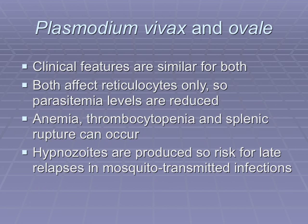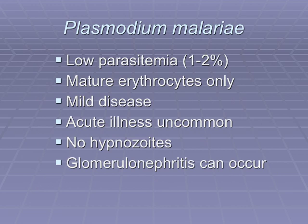Plasmodium vivax and ovale: vivax is much more prevalent, but clinical features are similar for both. They tend to be milder because both affect reticulocytes only, so they don't tend to have as high parasite levels. However, you can still get anemia, thrombocytopenia, and splenic rupture. Both are associated with the hypnozoite stage, creating a risk for late relapses. Plasmodium malariae tends to be the mildest, with very low parasitemia because it only affects mature erythrocytes. Acute illness is uncommon, there's no dormant hypnozoite stage, so you don't need primaquine. Glomerulonephritis can sometimes occur.